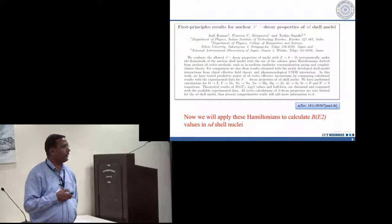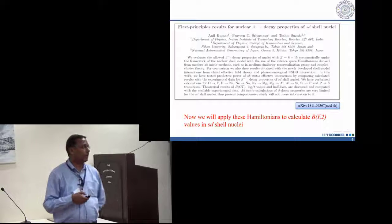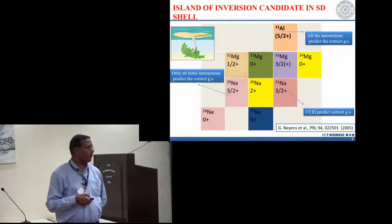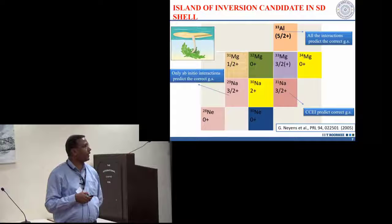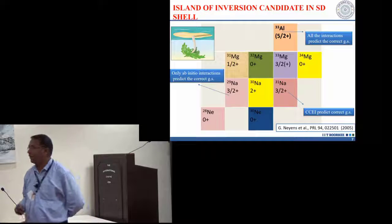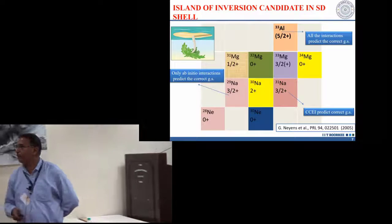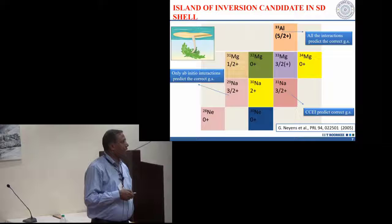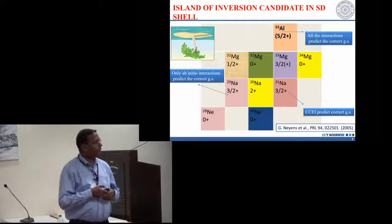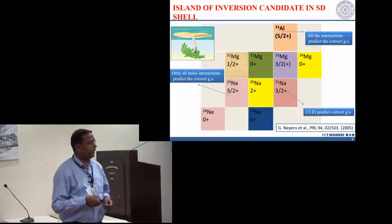First we discuss the electromagnetic, then BGT, then log FT value. If you discuss the island of inversion candidate, normal filling of shell model is not obvious. It is expected we should include in our model space the PF shell nuclei. In that case, if you include the PF orbital, in some cases we are getting very good results.